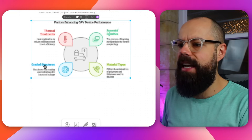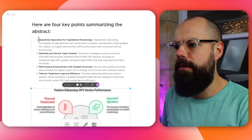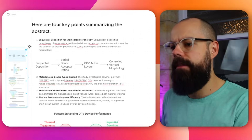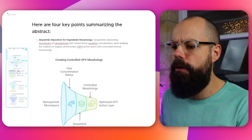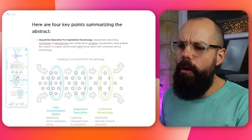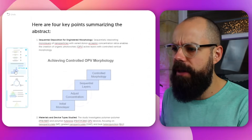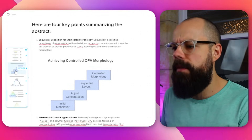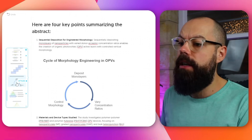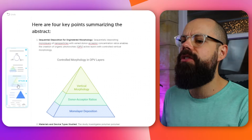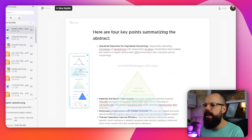So that's how you do it with all of this information. You can also take each individual section and say, I want a figure for that. It takes the four bullet points and gives you so many style options. We've even got things like 'achieving controlled OPV morphology — a simple cycle of morphology engineering.' All of this is just so easy to do and is a great way to fill out all of those presentations you're making.